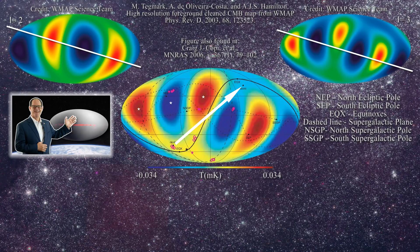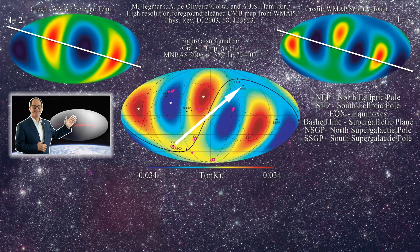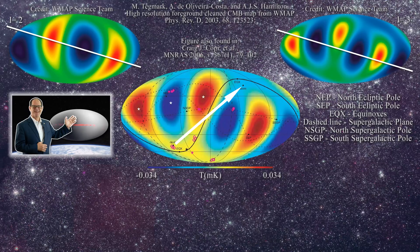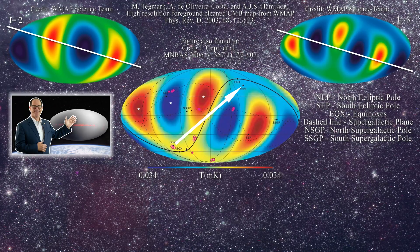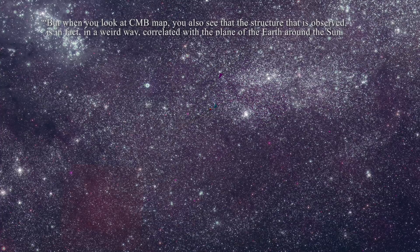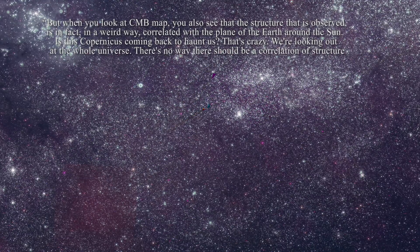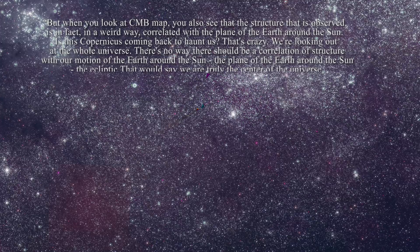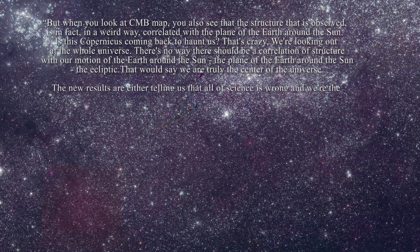The alignment of the quadrupole and octupole has been dubbed the 'axis of evil' in cosmology, because the result was unexpected and pointed to a non-Gaussian finding. It would imply a violation of the Copernican principle, which emphasizes that the Earth does not hold a privileged position in the universe. Lawrence Krauss described the problem this way: when you look at the CMB map, you see that the structure observed is, in a weird way, correlated with the plane of the Earth around the Sun. Is this Copernicus coming back to haunt us? We're looking out at the whole universe — there's no way there should be a correlation of structure with the plane of the Earth around the Sun, the ecliptic. That would say we are truly at the center of the universe.